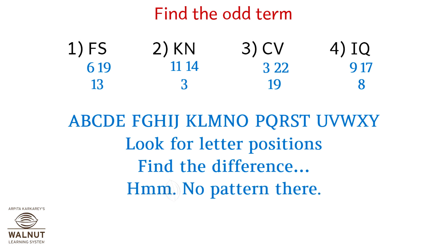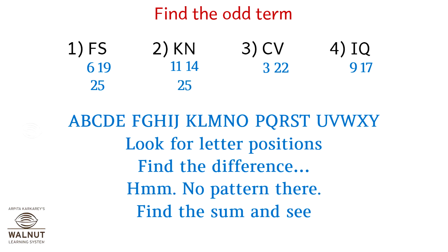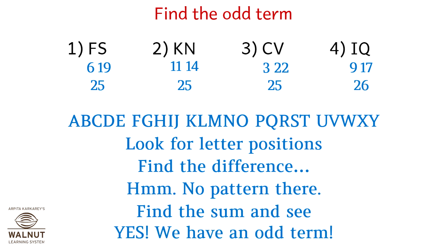So that is an odd working out. Let's find the sum. 6 plus 19 is 25, 14 plus 11 is 25, 3 and 22 is 25, but 9 and 17 is 26. So we have a winner — the odd term is option 4.